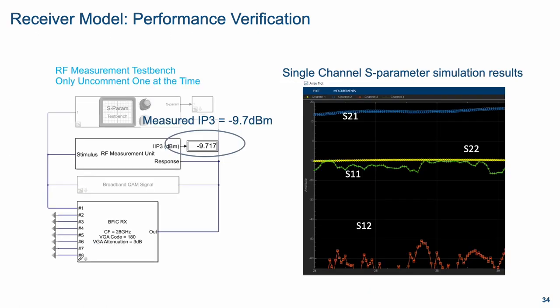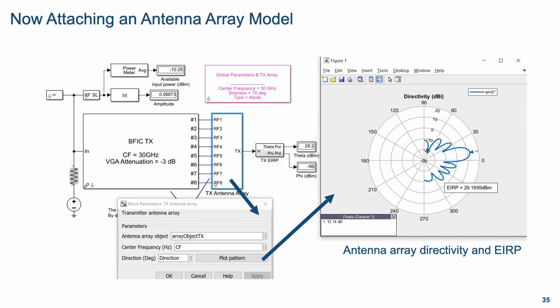Another example of verification on the receiver: we verified IP3 at different frequencies, as well as S-parameters comparing with measurements as the reference. We also arranged the model so it could be connected to any arbitrary antenna array system. In this case, one OTBF transmitter is connected to an array of eight elements, allowing us to steer the beam in different directions and measure EIRP. We verified that the EIRP matches expectations compared to measurements and budget calculations, and you can also verify side lobe levels or whether tapering needs to be applied.